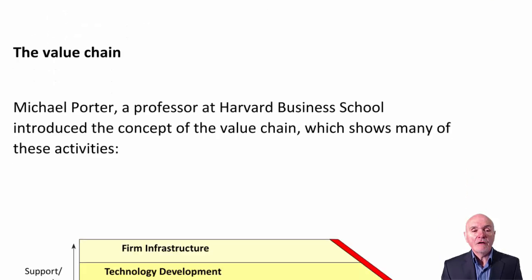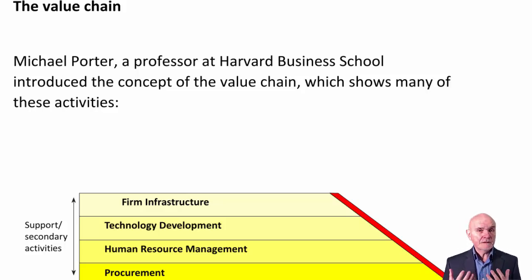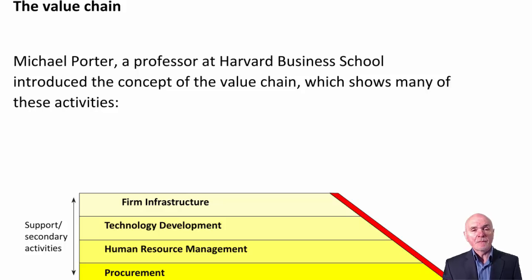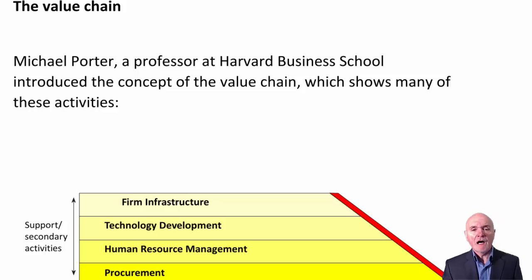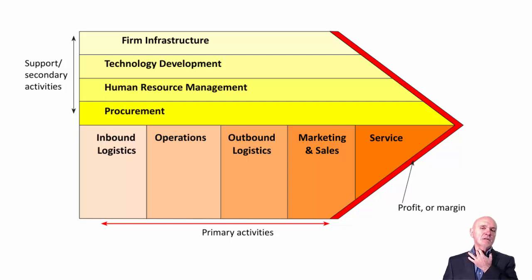A very important idea in operations management, and indeed the whole business of an organisation making profit, is the concept of the value chain. This was essentially invented by Professor Michael Porter of the Harvard Business School, and you need to know what is in the diagram of the value chain.